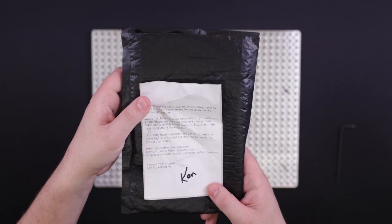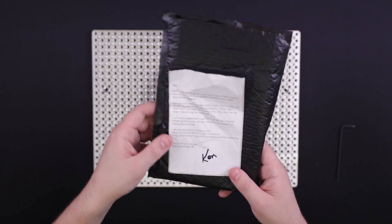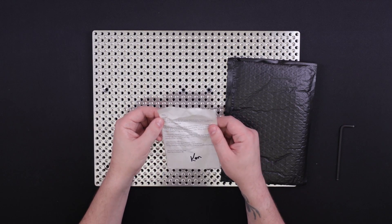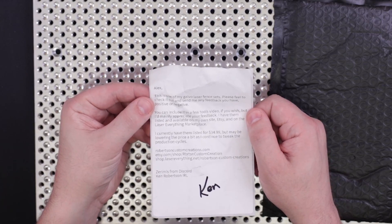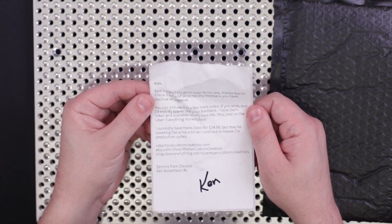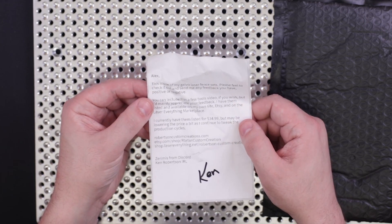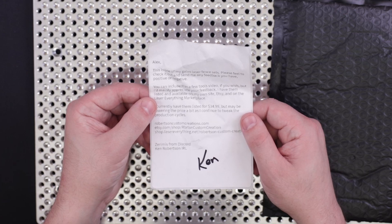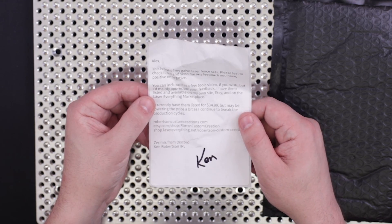This was sent over to us for free by Ken Robertson to check out from Robertson Custom Creations and he actually wrote us a little note. It says this is one of my Galvo laser fence sets. Please check it out and send me any feedback you have positive or negative. You can include it in a few tools videos if you wish but I'd mainly appreciate your feedback.